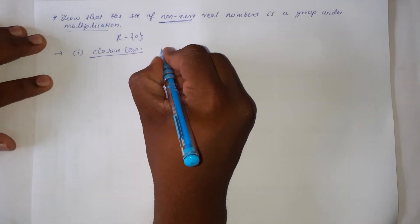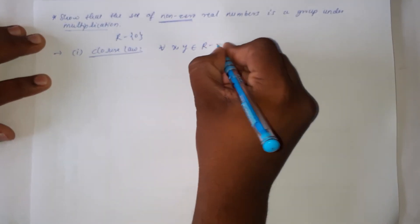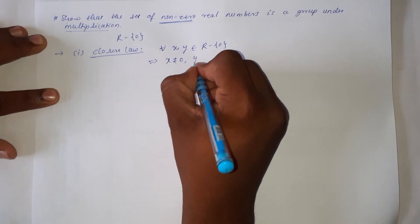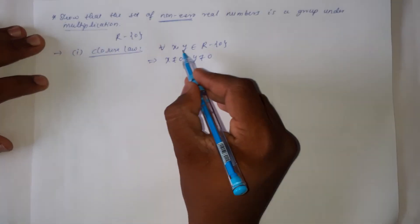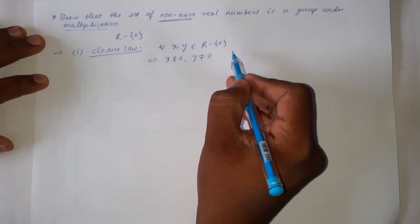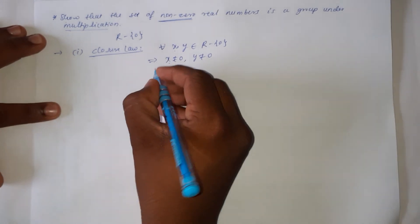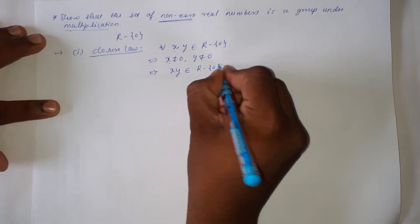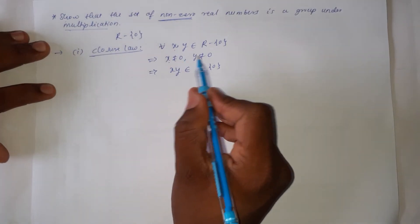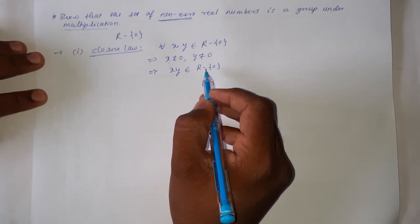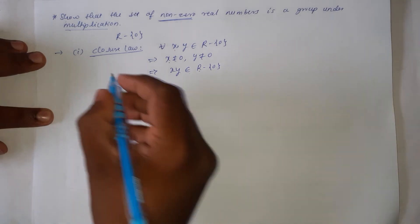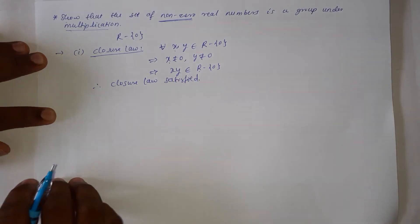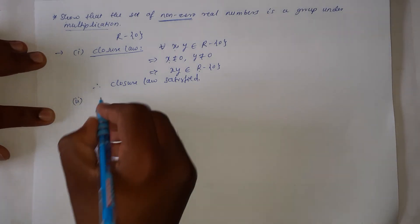First law: closure law. Let x and y belong to R minus {0}, meaning x ≠ 0 and y ≠ 0, because these elements belong to the set of nonzero real numbers. Since the binary operation is multiplication, the product of two nonzero real numbers is again nonzero, so x·y belongs to R minus {0}. Therefore, closure law is satisfied.